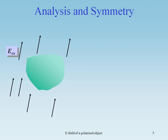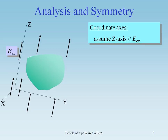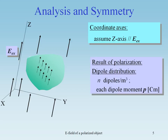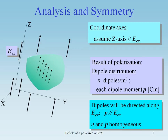The analysis. Assume the z-axis is parallel to the external field. The result of the polarization will be that the dipoles inside the dielectric will be aligned along the external field. Suppose we have n dipoles per cubic meter, and each dipole carries a dipole moment P in coulombs times meters. The dipoles will be directed along the electric field, so the vector P is parallel to EX, and n and P will be homogeneous.